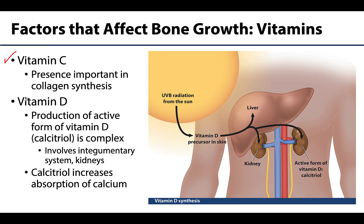Vitamin D will come up over and over again throughout the course. The active form of Vitamin D is called calcitriol, which is complex and involves the skin and kidneys — details we'll cover in upcoming lectures. For our purposes, calcitriol helps build bone by allowing increased absorption of calcium from the gastrointestinal tract into the blood, so calcitriol plays a key role in increasing calcium absorption.